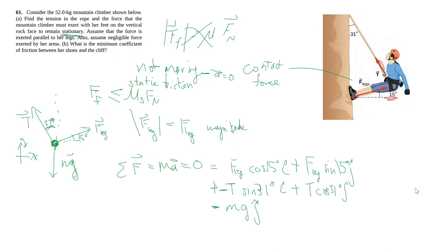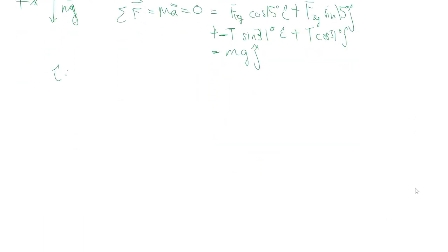Again we have two unknowns but we have two equations because we have one in the i and one in the j.